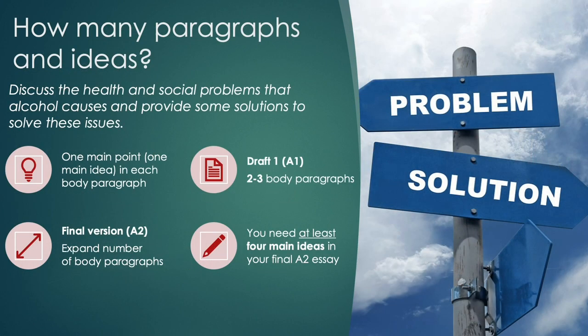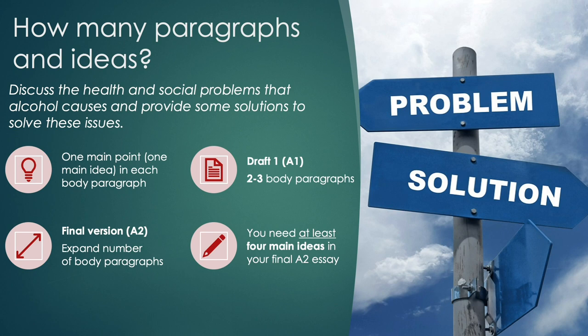Let's look in more detail at how many paragraphs you need to write. You need to write two to three paragraphs in draft 1 and then expand on that in the final version of your essay. Each body paragraph should have one main idea. In total, you'll need at least four main ideas in your essay — two main problems, which can be divided into causes and impacts if needed, and corresponding solutions. It's probably safer to have one or two more.